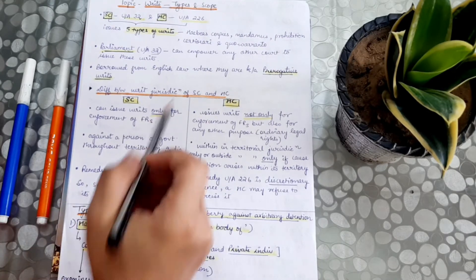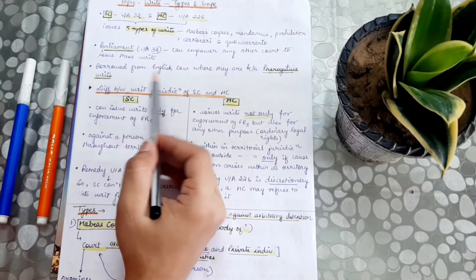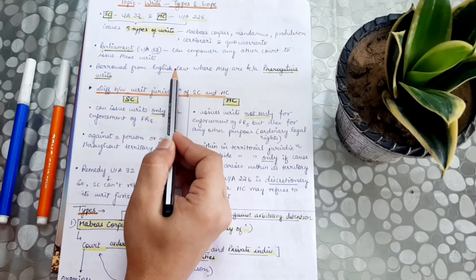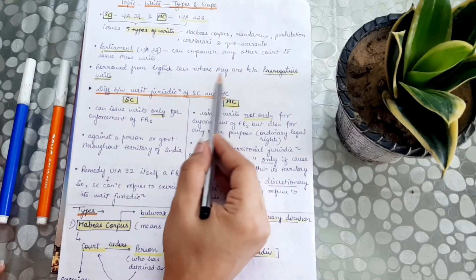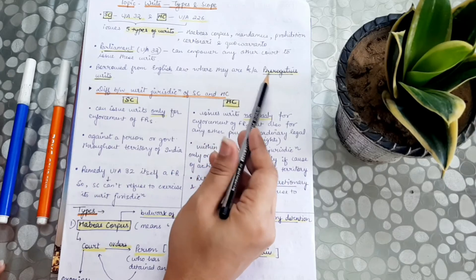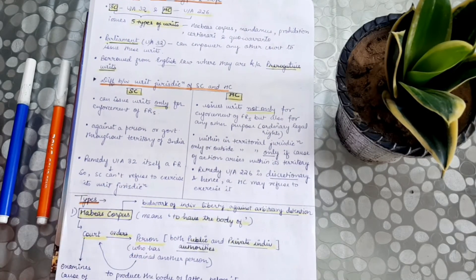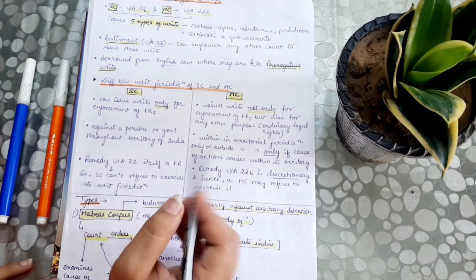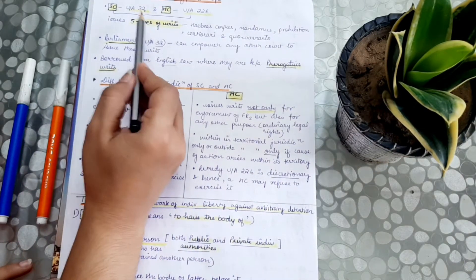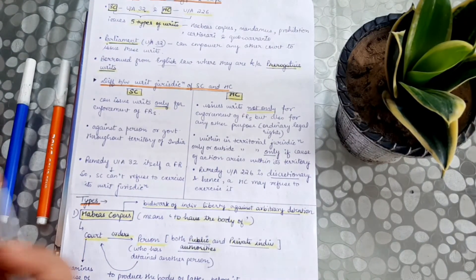Writ jurisdiction comes from English law — Britain's law — where they are known as prerogative writs.